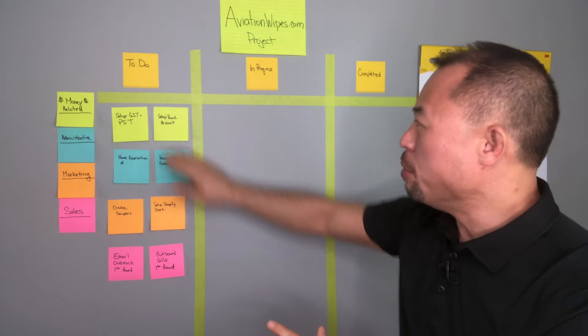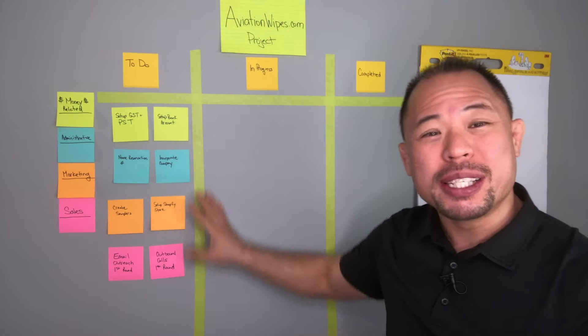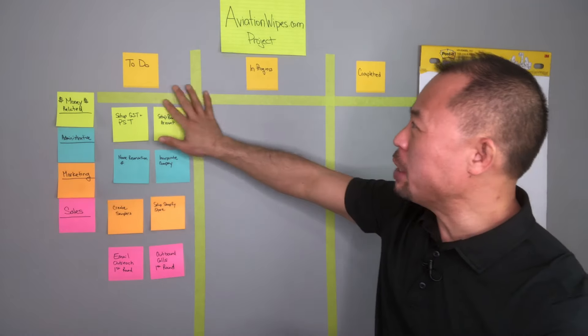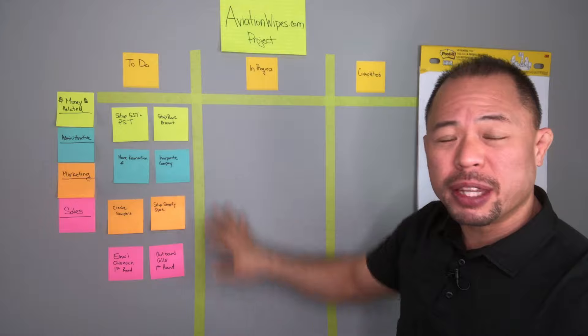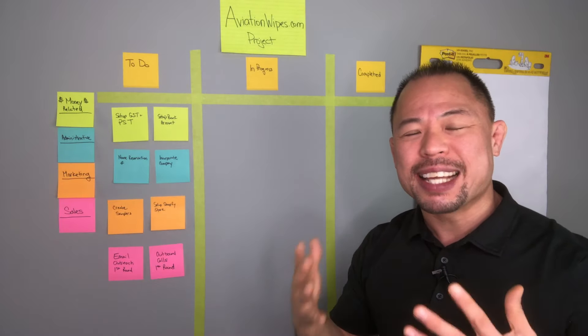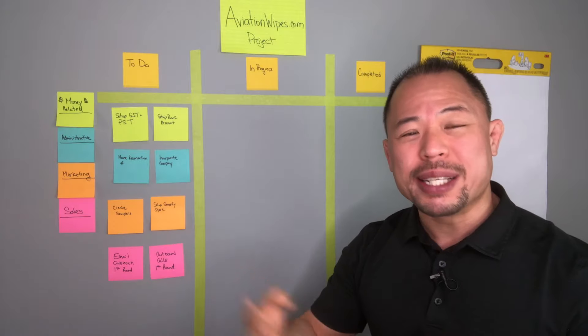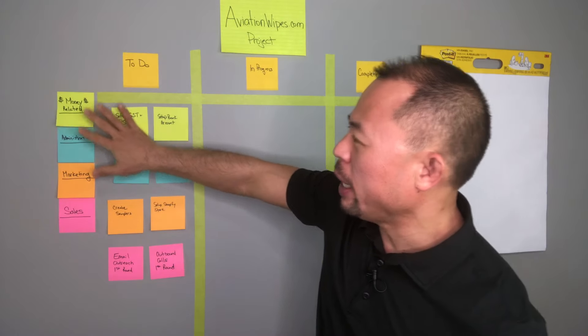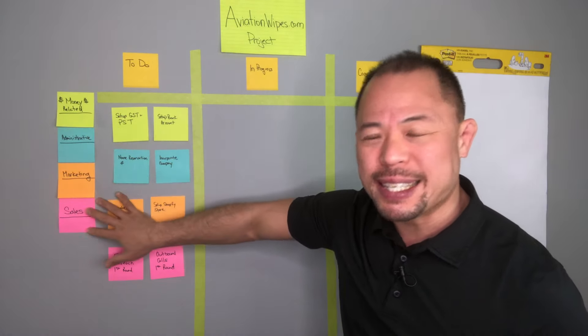First off, you'll need to mark a grid line like this. So once I set up the grid line into to do, in progress, and completed columns, I sat down and categorized the things that I needed to do. The four categories I came up with were money-related, administrative, marketing, and sales.